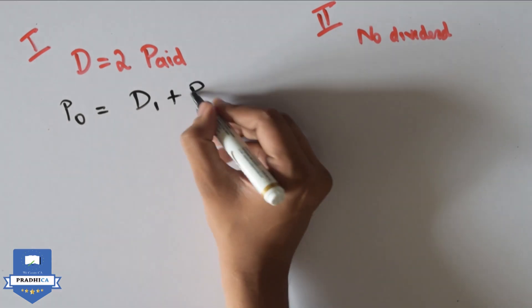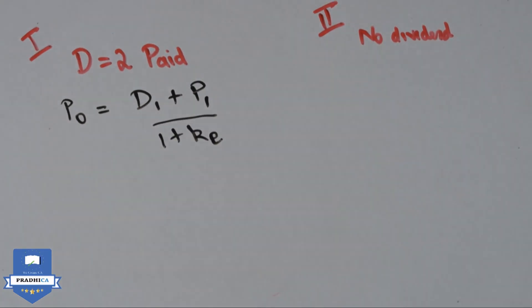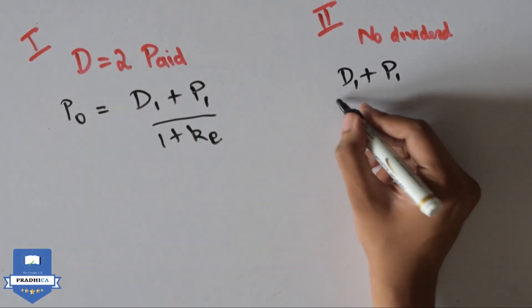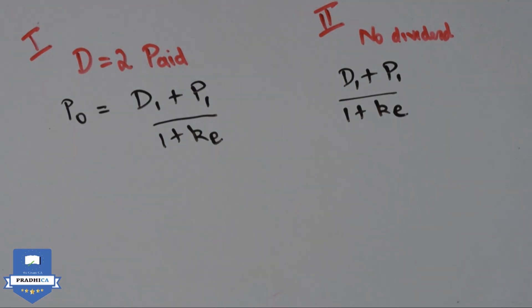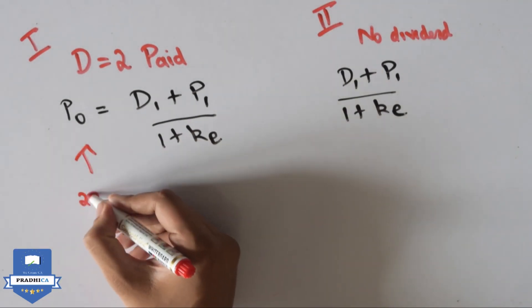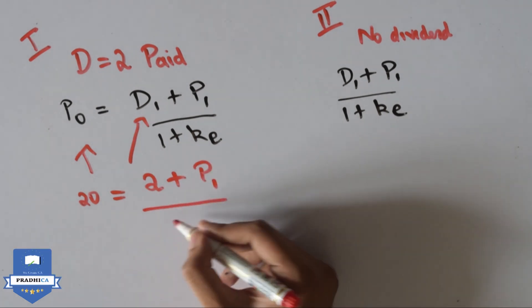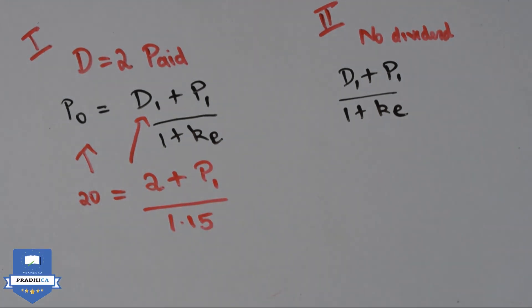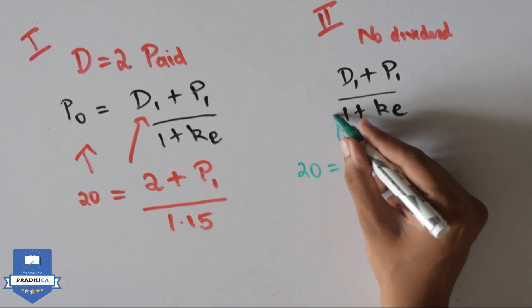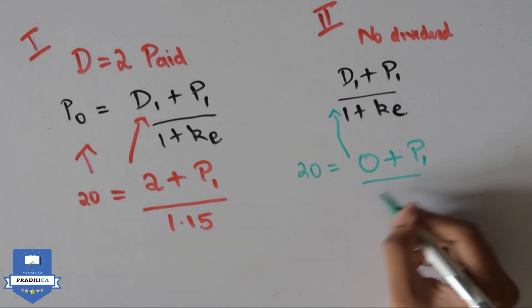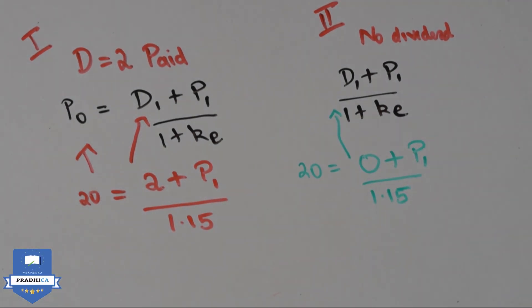We use a single period holding model to value the shares at the end of the year in both the cases. We substitute the values of P0, that is the price today, and the dividend to arrive at the value of the price at the end of the year. It should be noted that even if we use a multiple period holding model, we would still arrive at the same price after discounting.